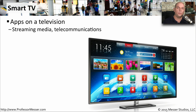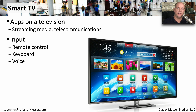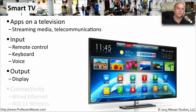Our televisions used to be one-way output devices, but now they provide both output and input through the use of apps running on smart TVs. We get information into the television with our remote control, maybe an external keyboard, or even with voice communication. The display itself is the output device. Many televisions will connect to our 802.11 wireless network, and some TVs have a jack so you can connect a wired Ethernet link.